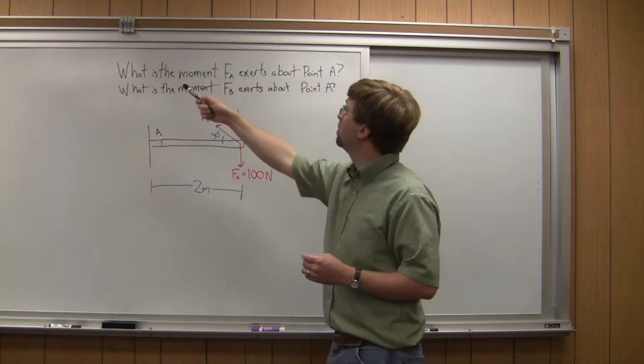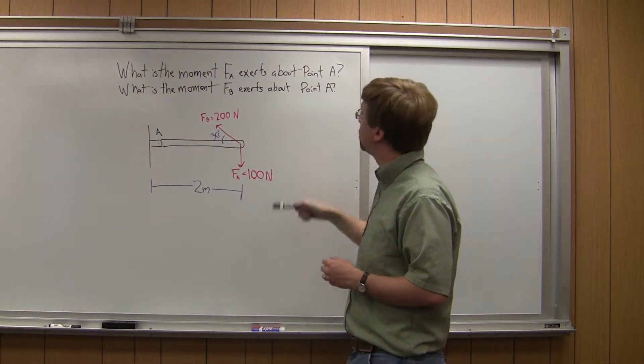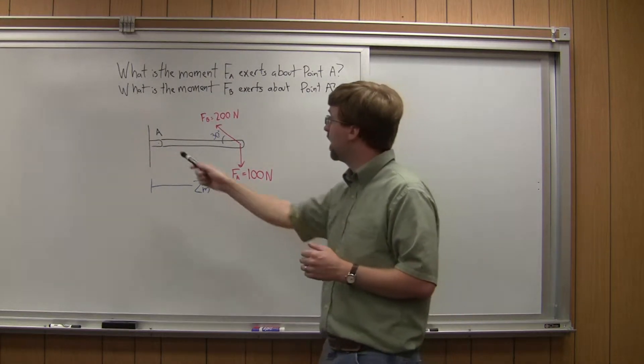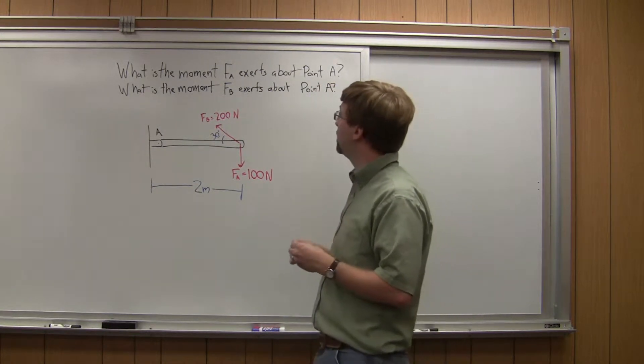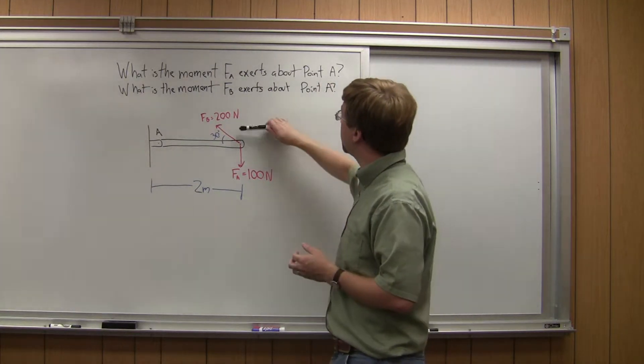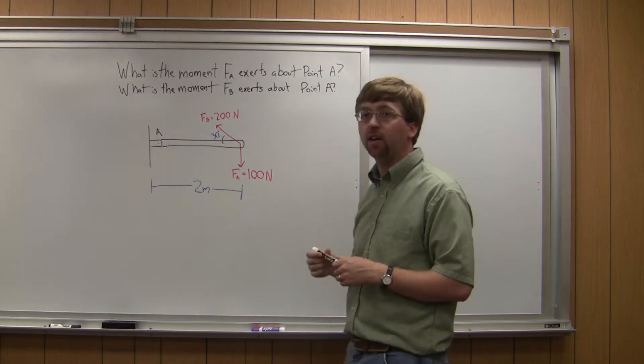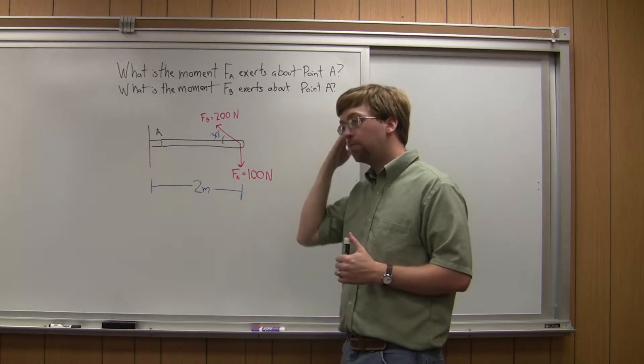So we're asked first, what is the moment that force A, this bottom force, exerts around point A, the joint over here? And then second, we're asked what is the moment that FB, this second force, exerts around point A? So we're going to do this in two steps.